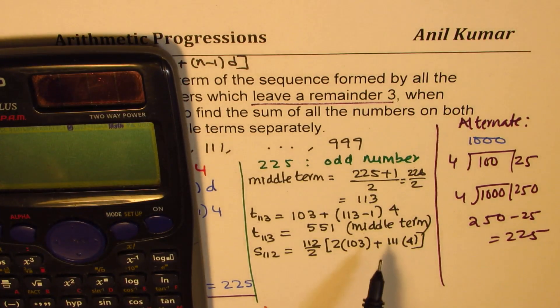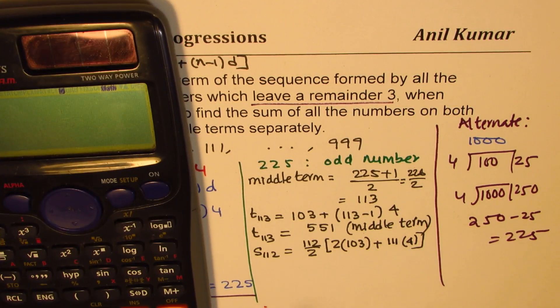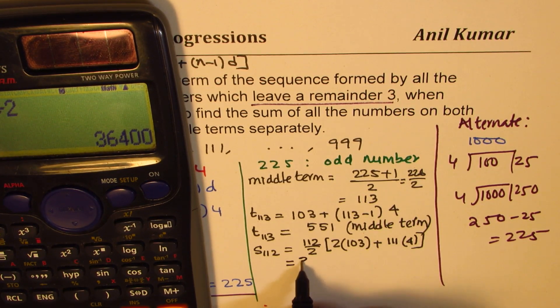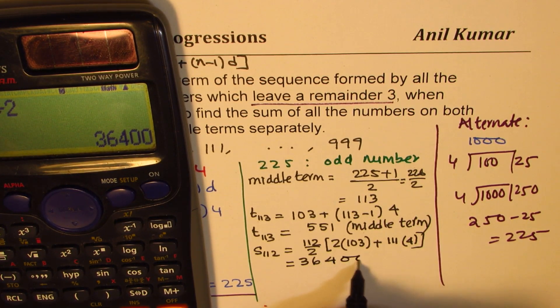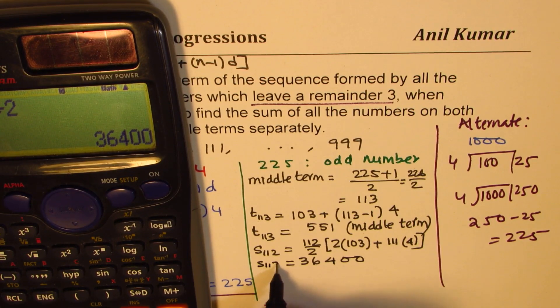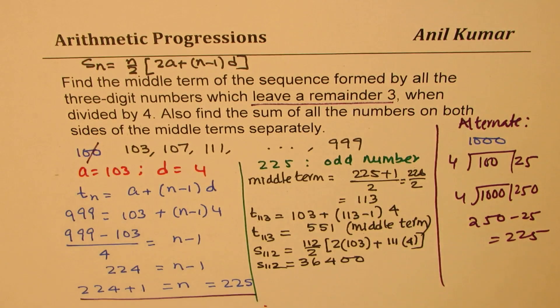So let's calculate this. So let's do the bracket first. We have 2 times 103 plus 111 times 4 equals 2. We'll multiply this by 112 and then divide by 2 to get the sum, which is equal to 36,400. Perfect. So that is how you find sum of 112 terms, the first half.